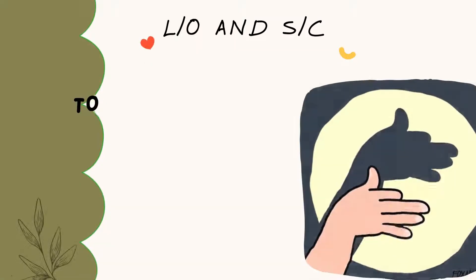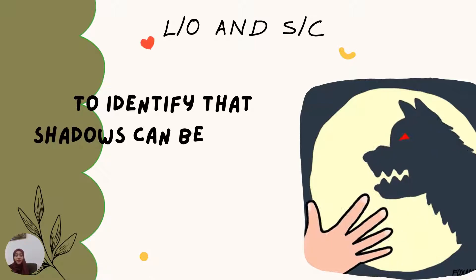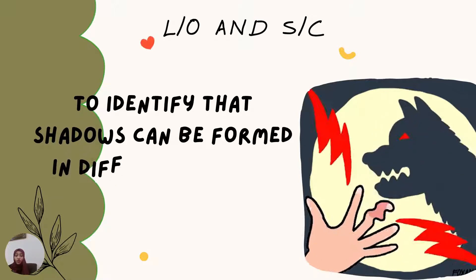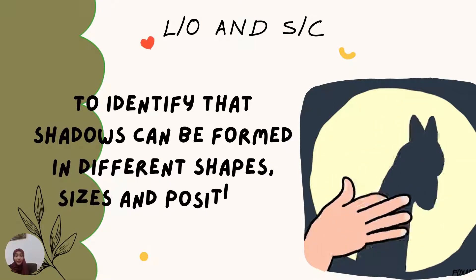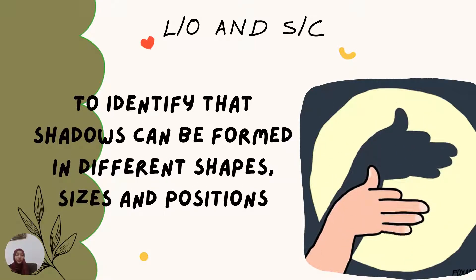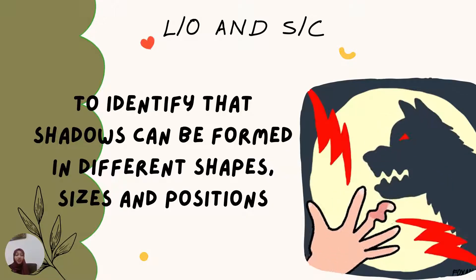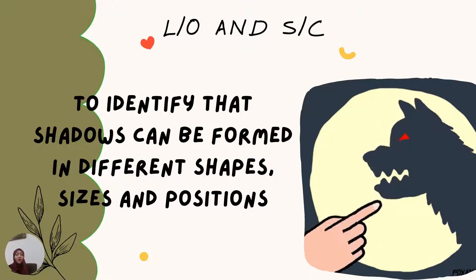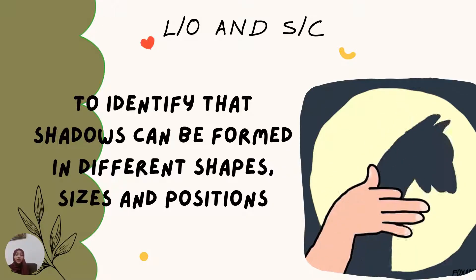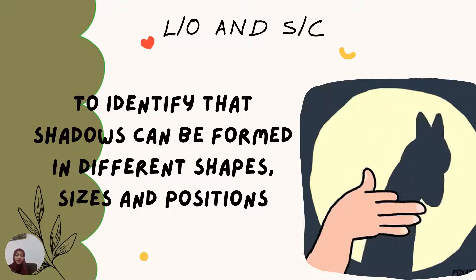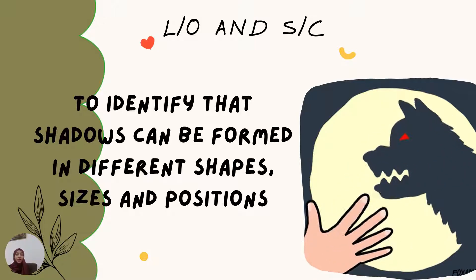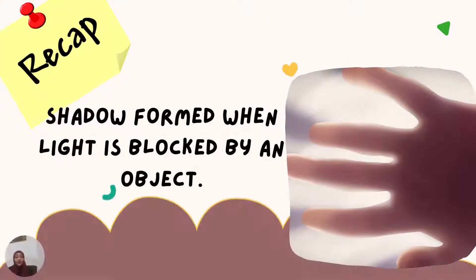So what is our learning objective and success criteria for today's topic? At the end of the class, you should be able to identify that shadows can be formed in different shapes, sizes, and positions. So let us recap what we learned in our last topic.